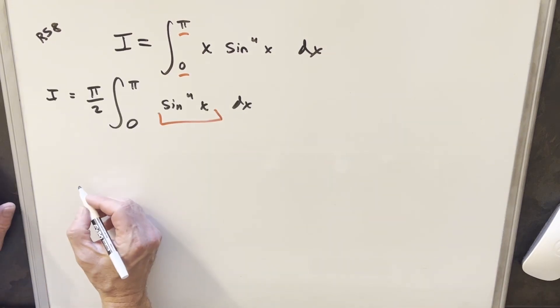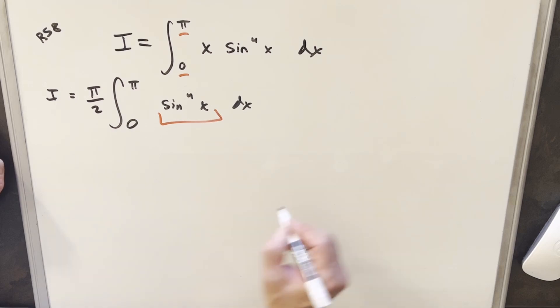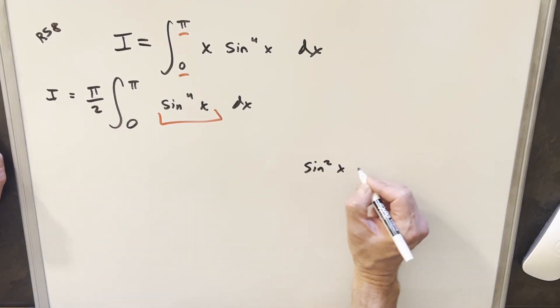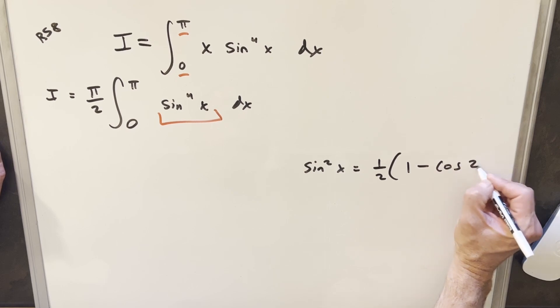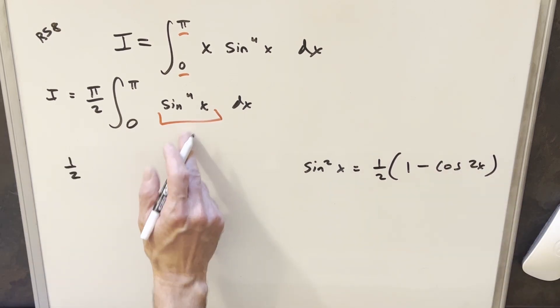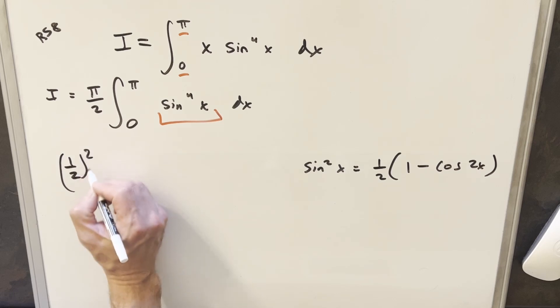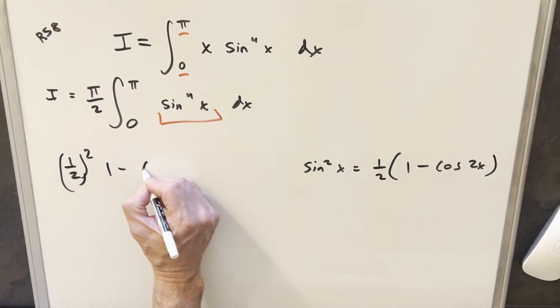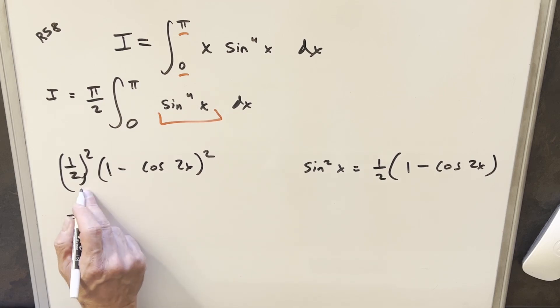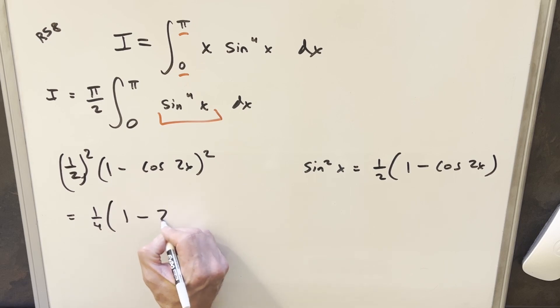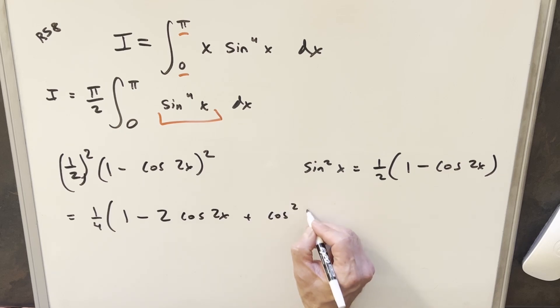So we'll just take this sine to the fourth x and reduce it with power reduction. So we have this formula. We know that sine squared x can be written as one half times one minus cosine of 2x. Because this is a fourth power, we'll need to square this whole thing. So I'll have one half squared in front, and then we're going to have one minus cosine 2x squared. Now half squared is going to be one fourth, and then we'll just multiply this whole thing out. So we're going to have one minus two cosine 2x plus cosine squared 2x.